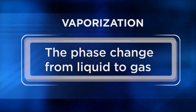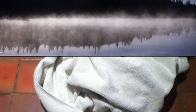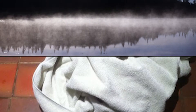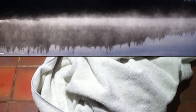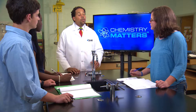When liquid transitions to the gas phase, we say it has vaporized. If vaporization happens on the surface — like the surface of a lake or a towel — we call that evaporation, and evaporation can take place at any temperature. Does water have to boil before it evaporates? No. Water on a driveway evaporates all summer long and it doesn't boil. Evaporation can happen at any time, while boiling is a bulk transformation that only happens when a liquid turns to gas and bubbles are formed.